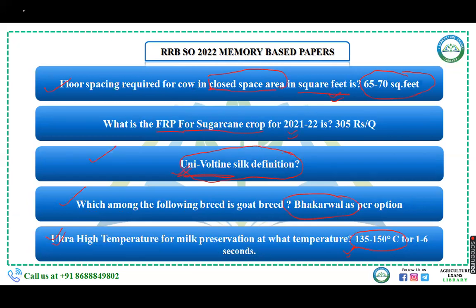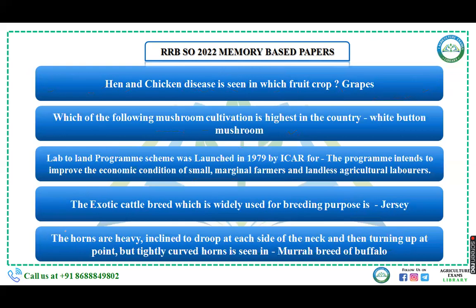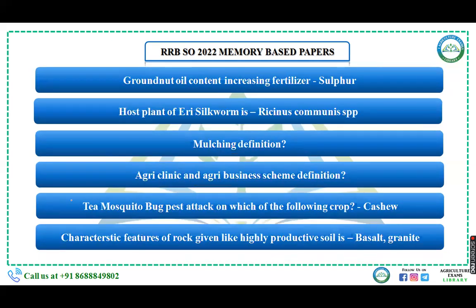As you can see from just two slides, there are many questions directly or indirectly from animal science — about five questions so far, including dairy. From agronomy: sulfur fertilizer increases the oil content in groundnut. Host plant of eri silkworm is Ricinus communis — two questions from this section also.